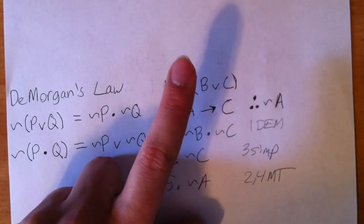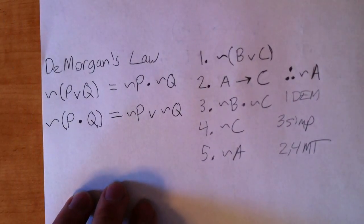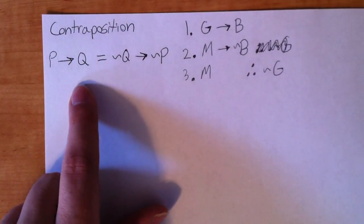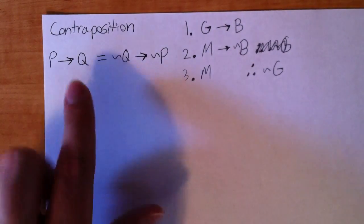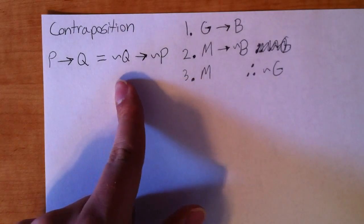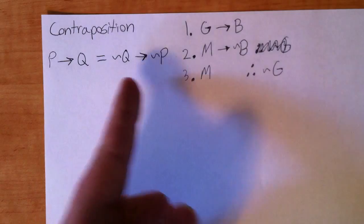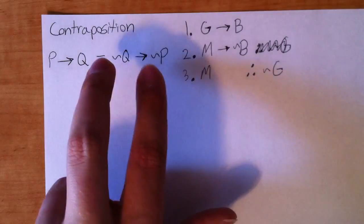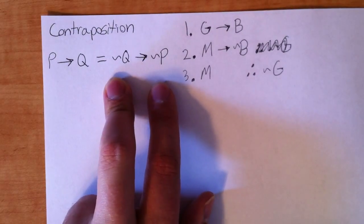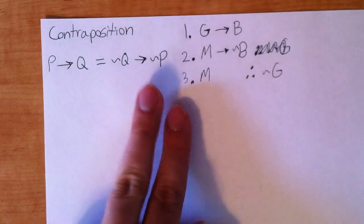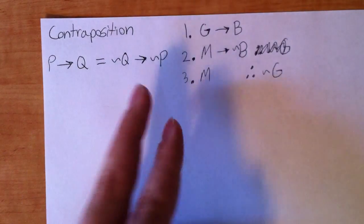DeMorgan's is going to come up a lot, a lot, a lot, so definitely spend some time reviewing it. Finally, our last rule, contraposition. Contraposition's pretty straightforward. It's just flipping in a conditional. So if you have a conditional, you can flip the order and change the tildes and negate each side. So this is just that, flipped with tildes. Conversely, if you have two tildes in a conditional, then you can take both of them away and put it like that. Remember, you can go this way or that way with these rules.